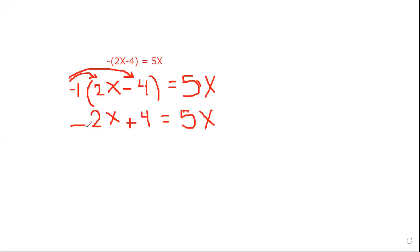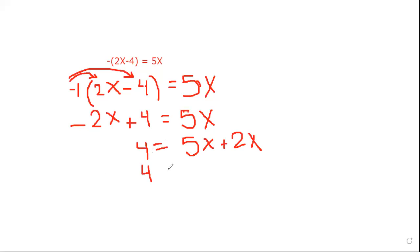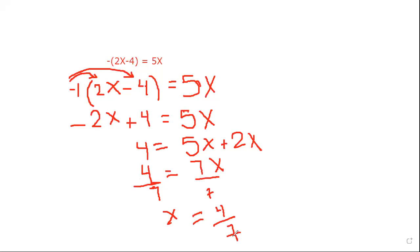We have plus 2x, which means you will transfer negative 2x to the opposite side. So it will be 5x, and once we transfer negative 2x it will be positive 2x. This is equal 4. Now we have 4 equal 7x. Divide both sides over 7, and by the end we have x equal 4 over 7. So the solution set: x equals 4 over 7.